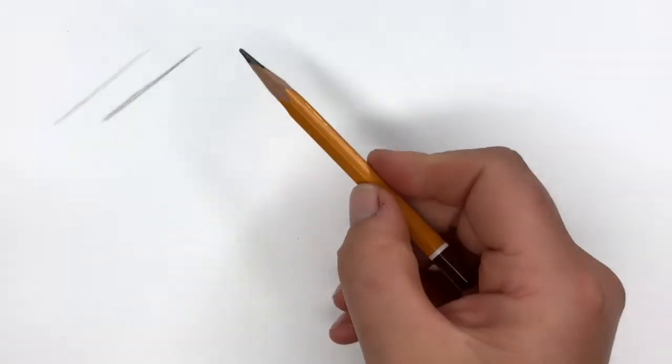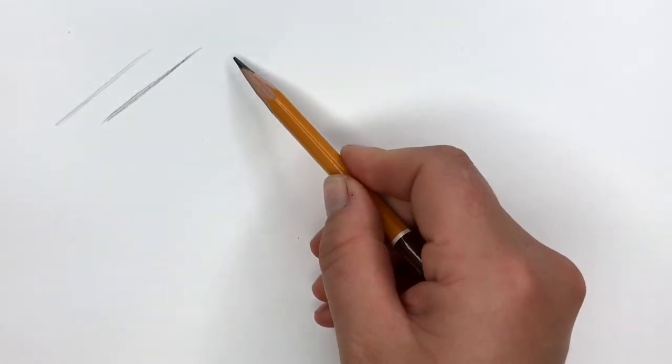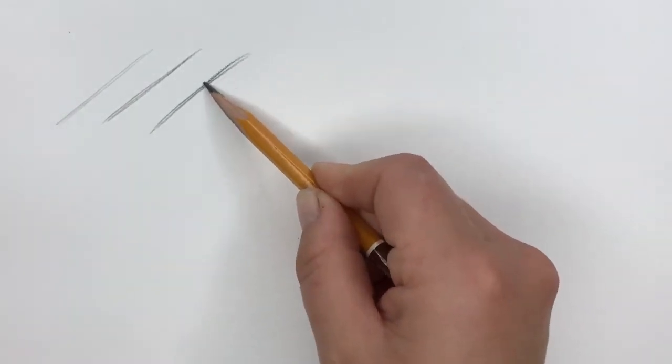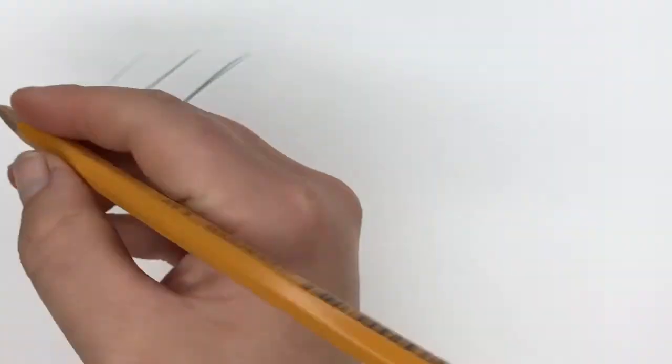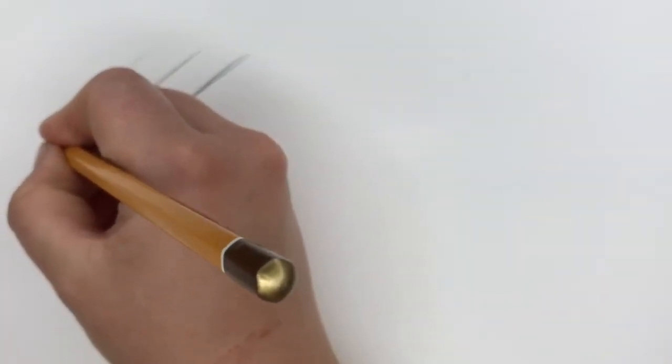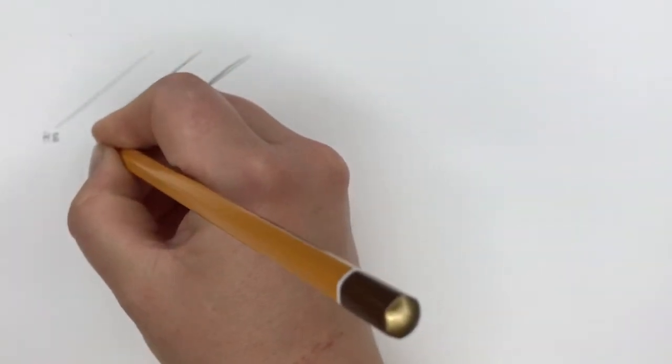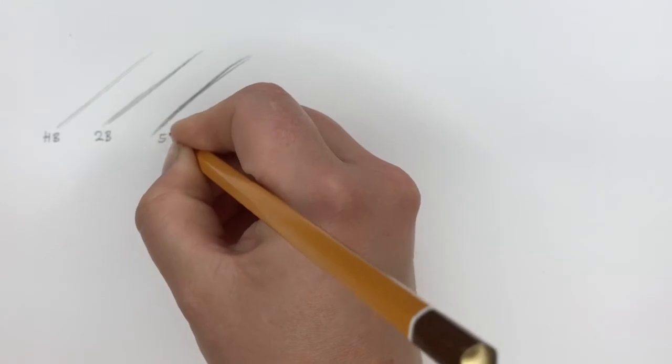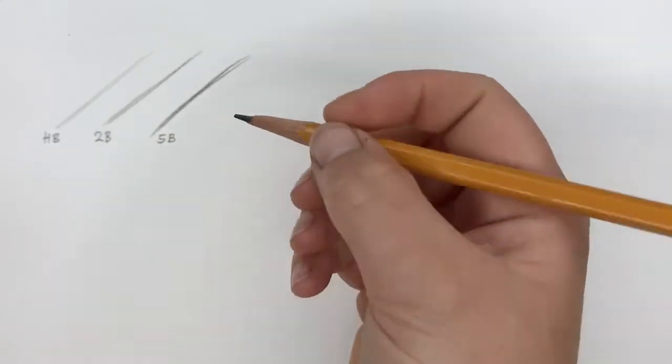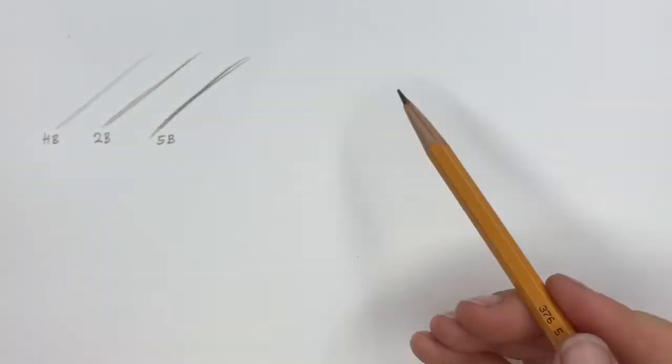The 2B is something in between, so it's soft and a little bit darker. And then the 5B is even softer and even darker. You don't need to have from HB up until 10B. These three are very manageable to get, cheap, and you can draw almost anything with the combination of these.